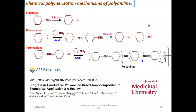Let us look at the polymerization mechanism involved in the formation of polyaniline. It involves three steps and is a free radical polymerization catalyzed by ammonium persulfate as the initiator, with aniline as the reactant. In the initiation step, the first step, aniline reacts with the initiator. The initiator oxidizes the aniline and creates a free radical — the anilinium free radical is formed.